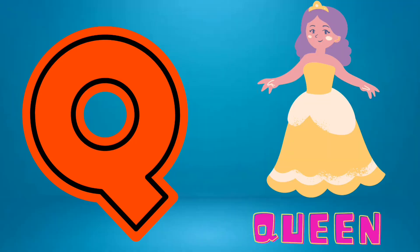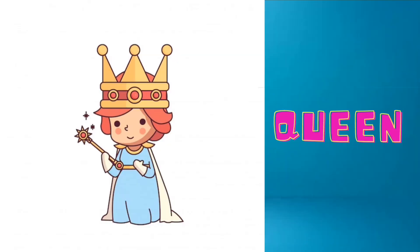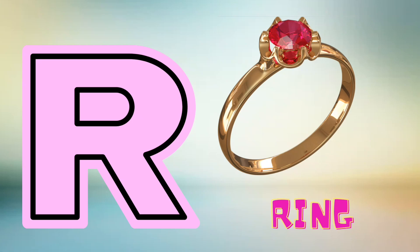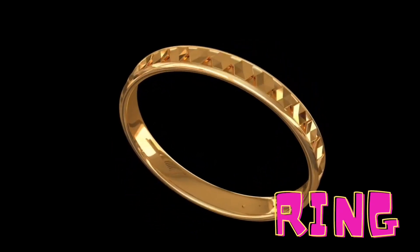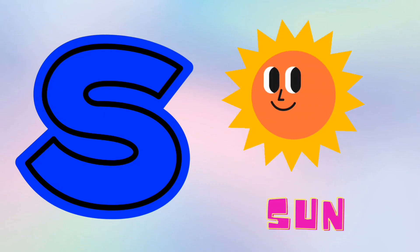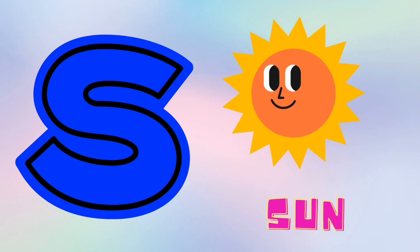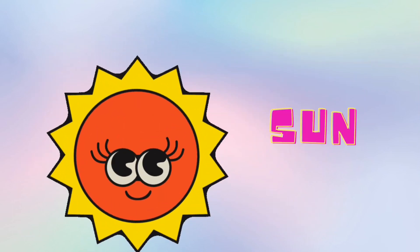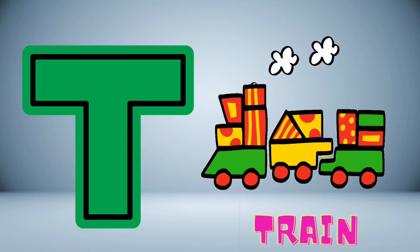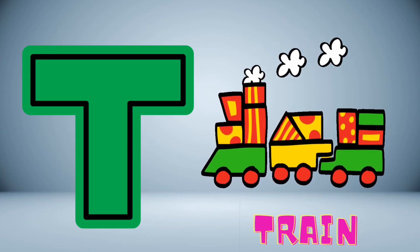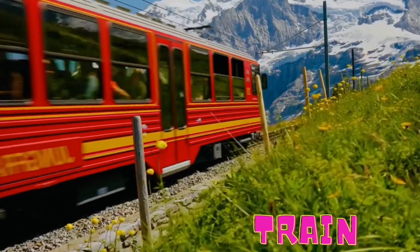Q is for queen, queen. A is for queen. A is for sun, sun. B is for chain, chain.